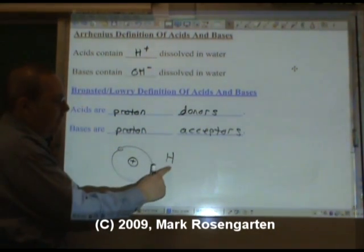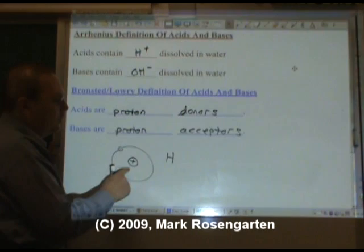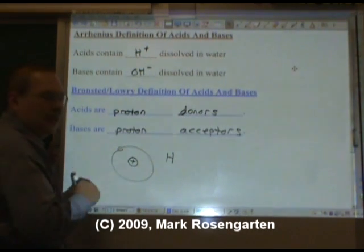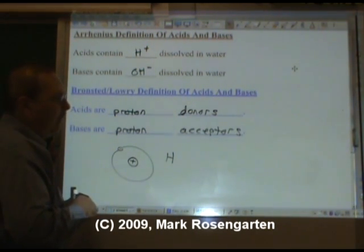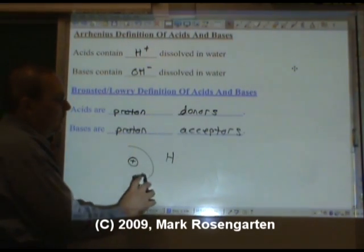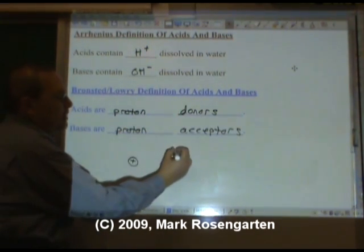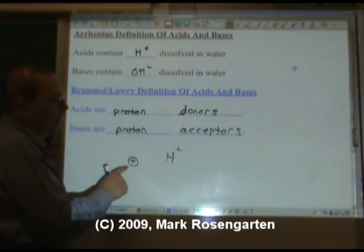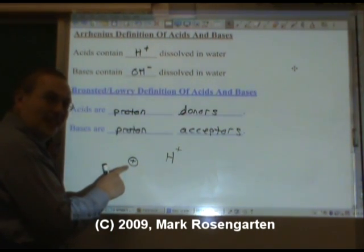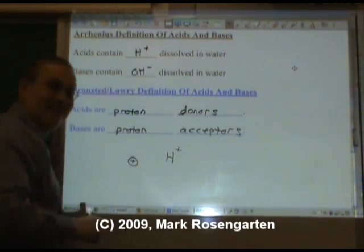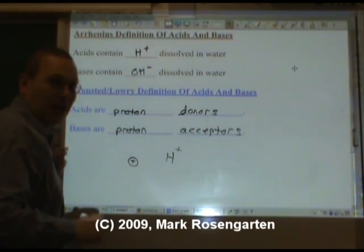A hydrogen atom is made up of a proton, with an electron zipping around outside of it. However, when hydrogen loses its one and only valence electron, it becomes a hydrogen ion — a proton. That's all a hydrogen ion is. It's what's called a naked proton.